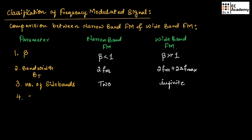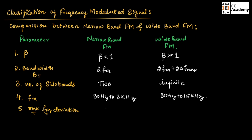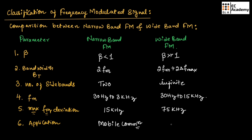The message signal frequency Fm ranges between 30 Hz to 3 kHz for narrow band FM, and 30 Hz to 15 kHz for wide band FM. For maximum frequency deviation: narrow band FM is 15 kHz, and wide band FM is 75 kHz. For applications: narrow band FM is used in mobile communication, and wide band FM is used in FM channels to transmit high quality music.